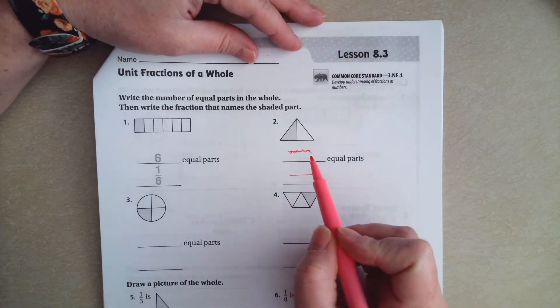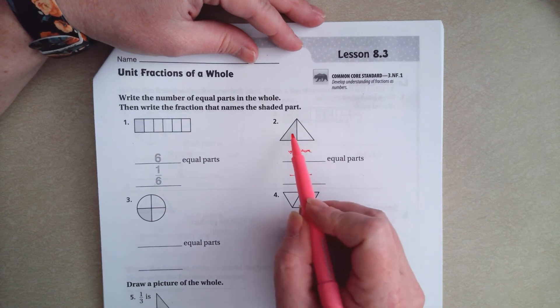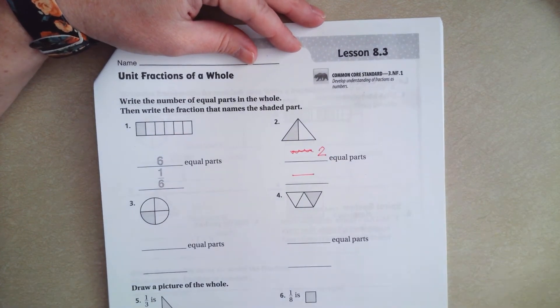So, all the equal parts are is how many equal parts are there. So in here, there's one, two. Just two. That's it.